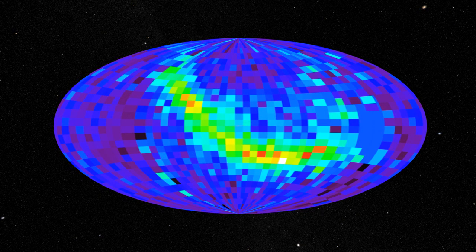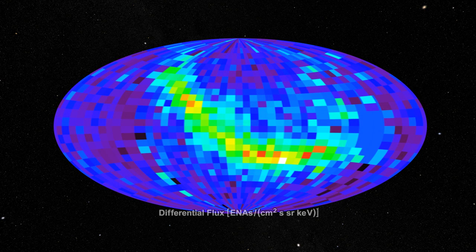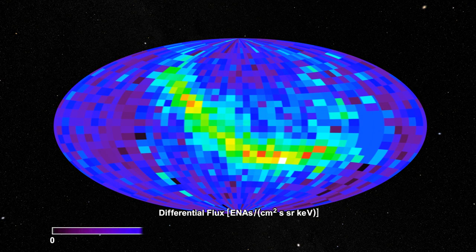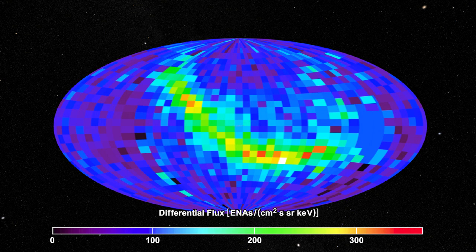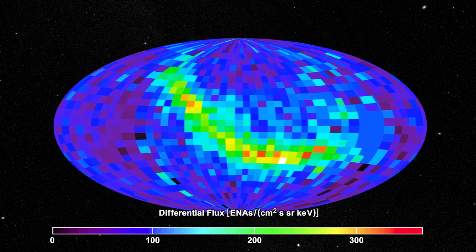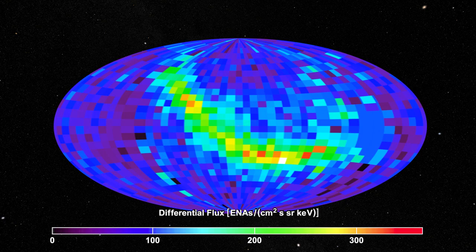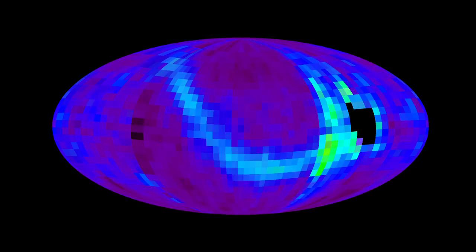The colors correspond to how many atoms hit the detector from a particular region. Violet represents few atoms, and the colors move up to red, which represents many atoms. IBEX can also tell how energetic each atom was and, much like filtering light to show one color, create an all-sky map of each energy level.